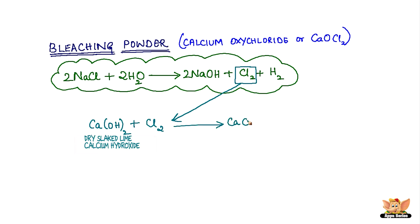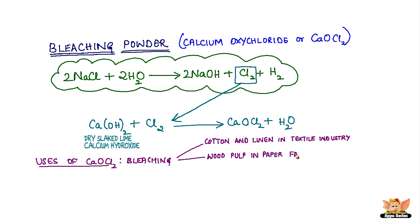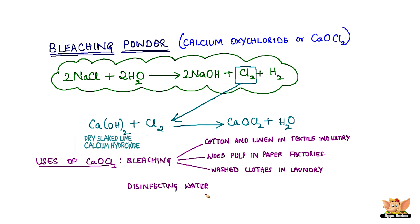This is the chemical equation for the preparation of bleaching powder. Bleaching powder is mainly used for bleaching cotton and linen in the textile industry, for the bleaching of wood pulp in paper factories, and for bleaching washed clothes in laundries. It is also used for disinfecting drinking water.